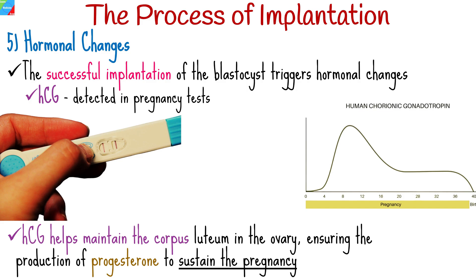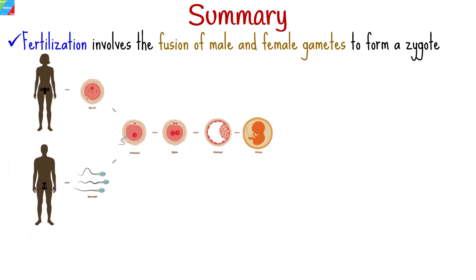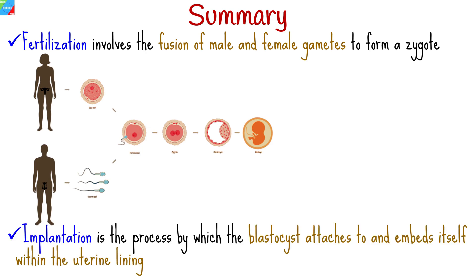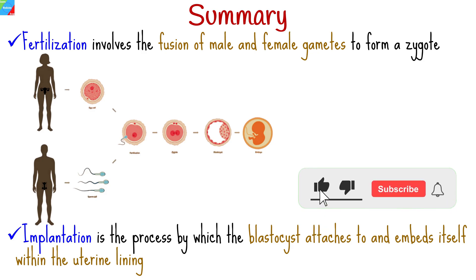In summary, fertilization involves the fusion of male and female gametes to form a zygote, while implantation is the process by which the blastocyst attaches to and embeds itself within the uterine lining. Both processes are essential for the initiation of pregnancy and the subsequent development of a new human life. We hope you found this video informative and helpful. In our next video, we'll look at the first trimester of pregnancy. Stay tuned, subscribe to our channel and hit that notification bell to be the first to know when the next video drops.